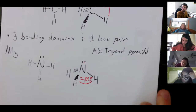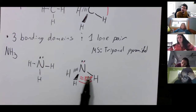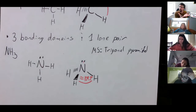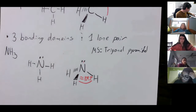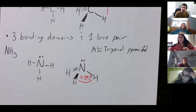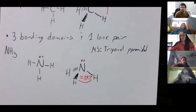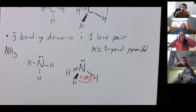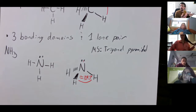Why the pyramidal part? If you draw a face connecting all the points, you get something that looks like a little pyramid. A student asks: if we write just 'trigonal pyramid' without the 'al,' is that wrong? The instructor answers: it's right, though 'trigonal pyramidal' is generally what's used.